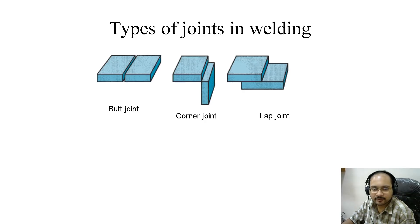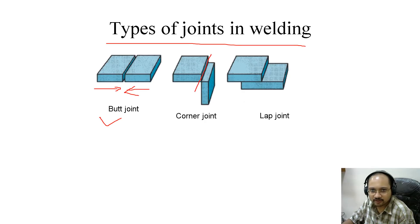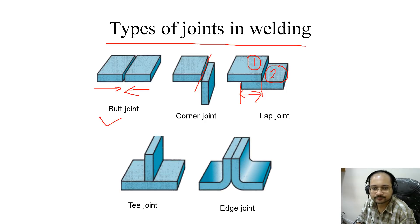Types of joints in welding: the butt joint joins two pieces laterally. The corner joint is a joint along the corner. The lap joint has the top piece sitting on the lap of the bottom one. The T-joint is in the shape of a T. The edge joint joins along the edge of the pieces.